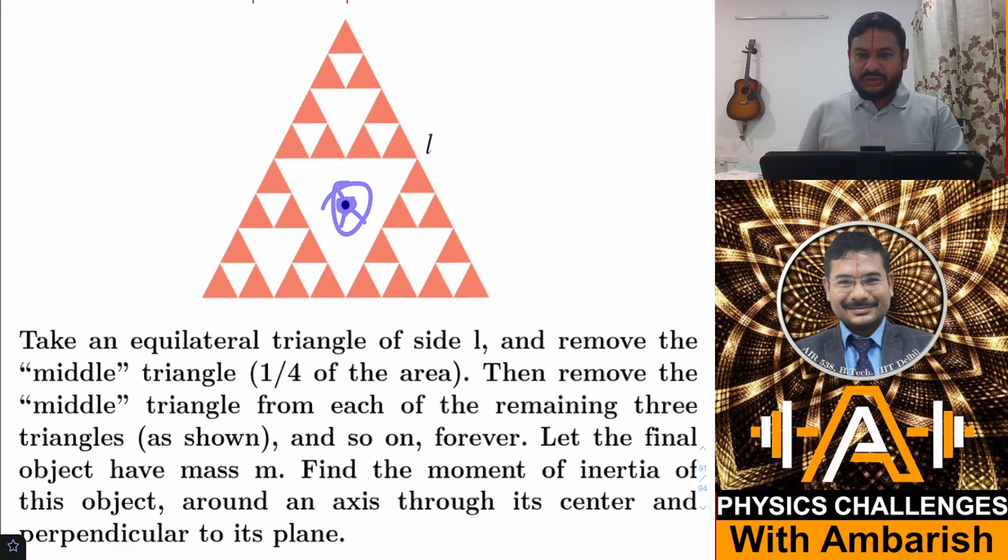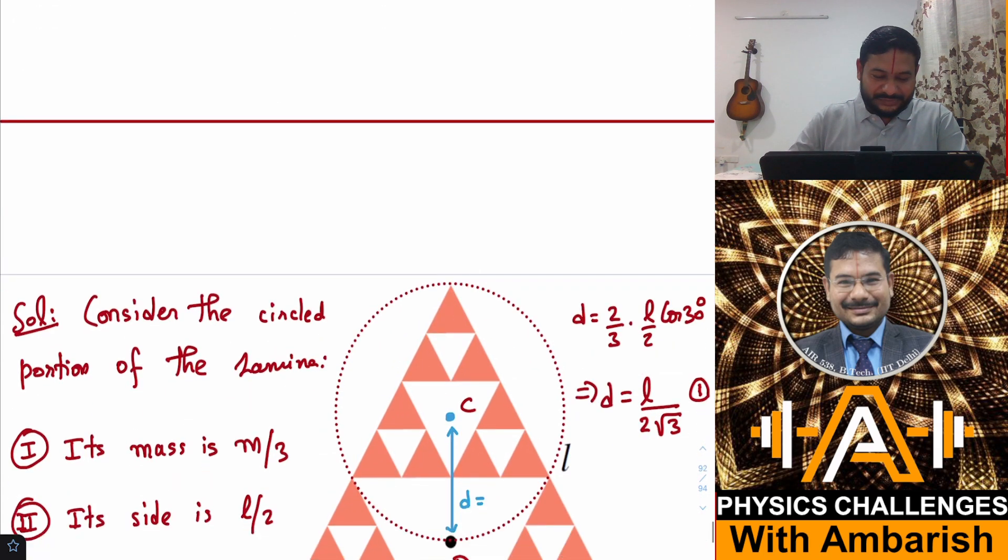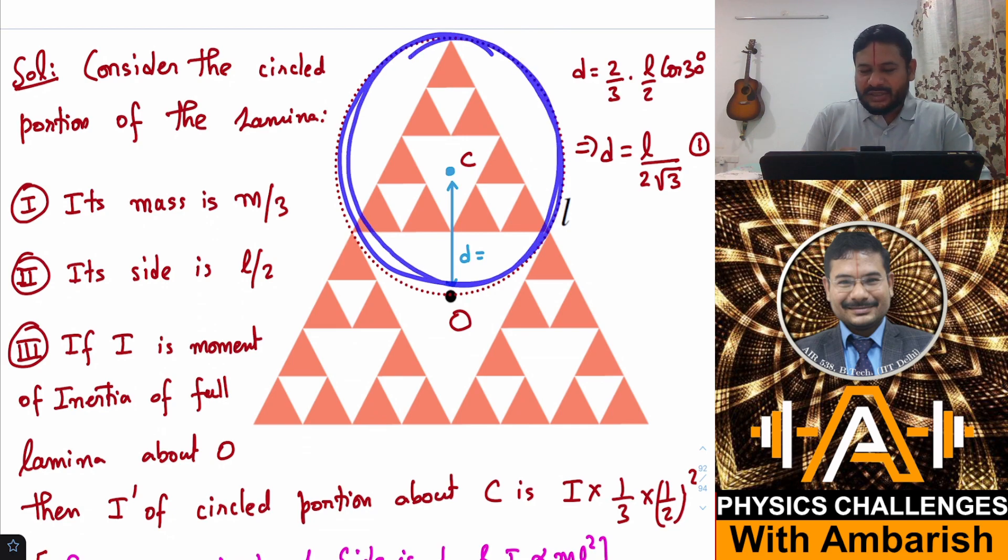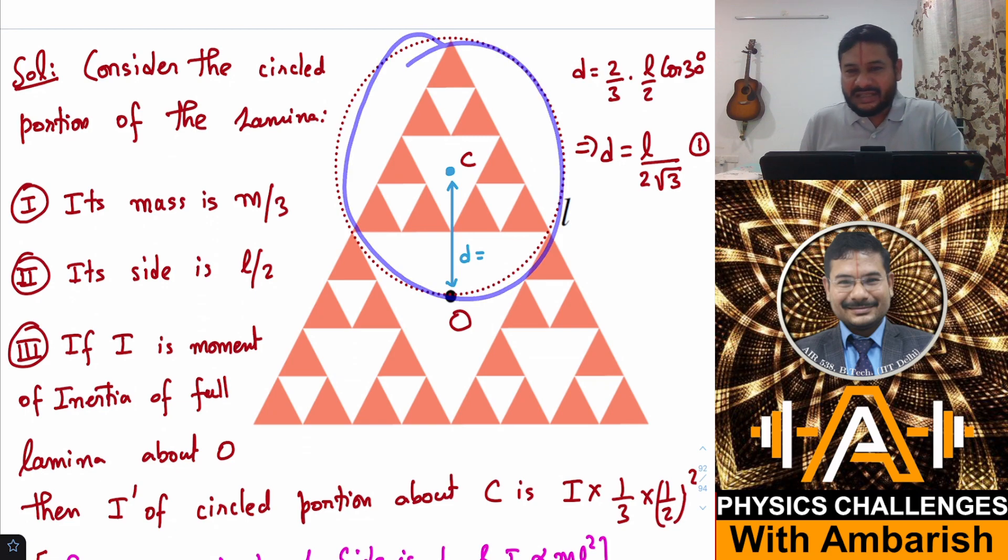Whatever is the remaining object after we continue this process indefinitely, you have to find the moment of inertia about this axis that is going into the page. If you want, you can give it a try. I'll get into my analysis straight away. So let's see how to do this one. Consider the circled portion of this lamina.